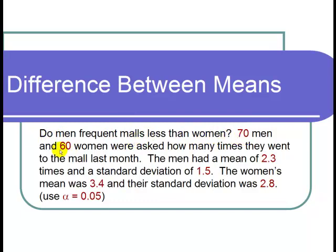70 men and 60 women were asked how many times they went to the mall last month. The men had a mean of 2.3 times and a standard deviation of 1.5. The women's mean was 3.4 and their standard deviation was 2.8. Use alpha equals 0.05.